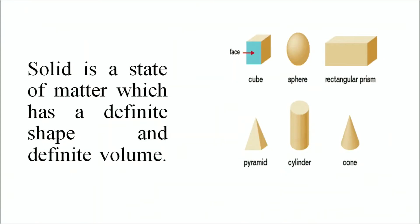We should know what is actually a solid and why this state exists. Therefore, we can say a solid is a state of matter which has a definite shape and a definite volume.